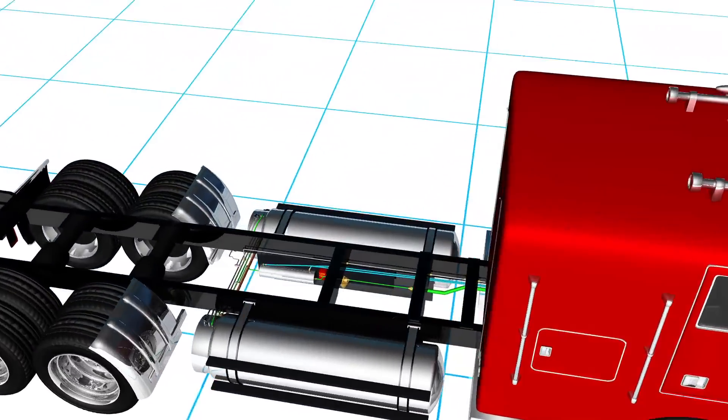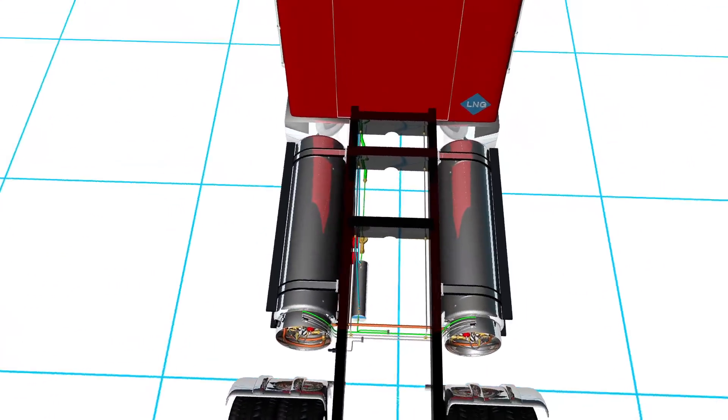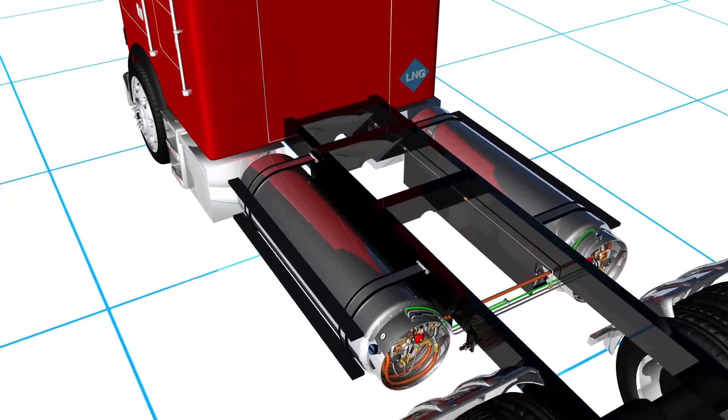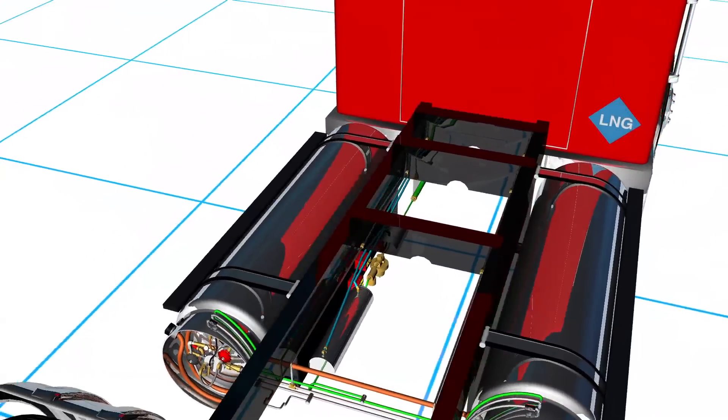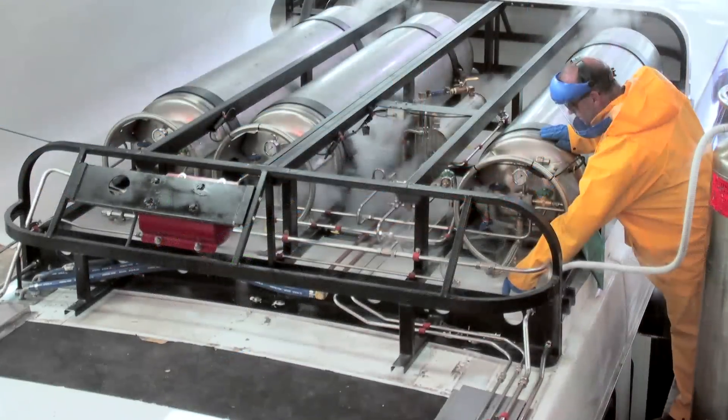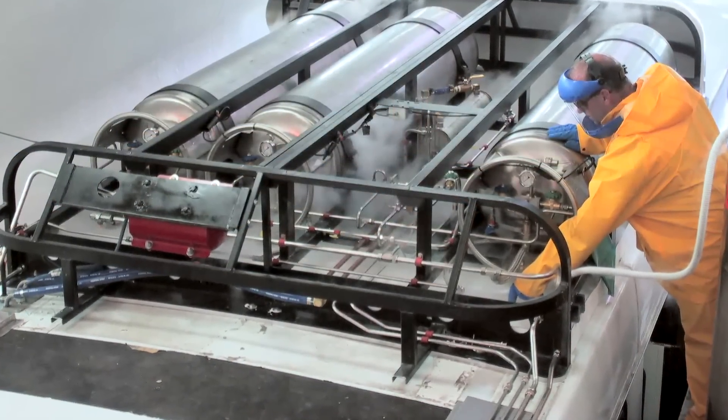The system includes the LNG tank, and on most heavy vehicles there may be multiple tanks. Typically, LNG tanks are mounted on a truck's side rail similarly to the way diesel tanks are mounted. In transit bus applications, they are usually found on the vehicle's roof.